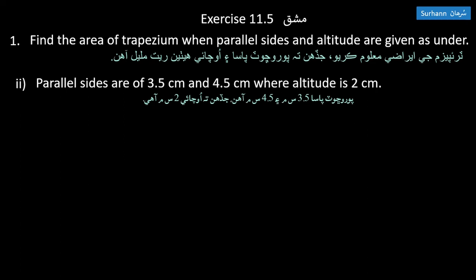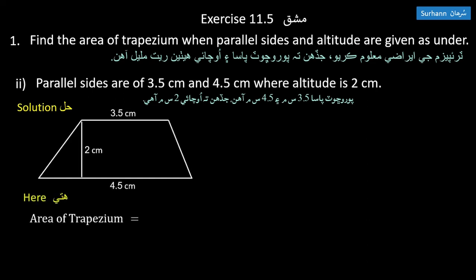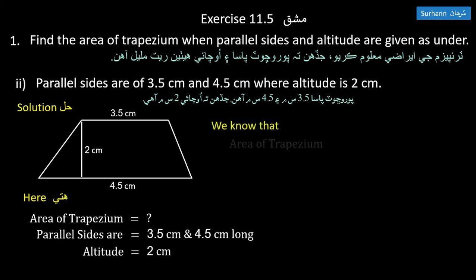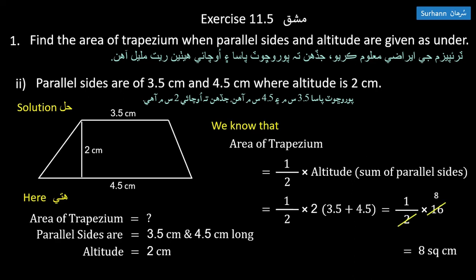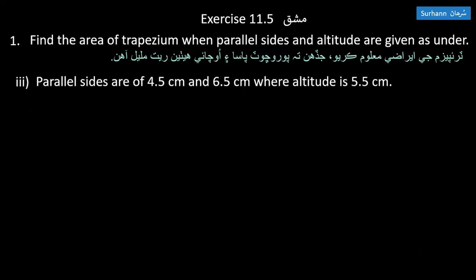To get the area of trapezium, use the formula: one-half times altitude times sum of parallel sides. One-half times 2 times (3.5 + 4.5) equals 8 square centimeters. Area of trapezium is 8 square centimeters.